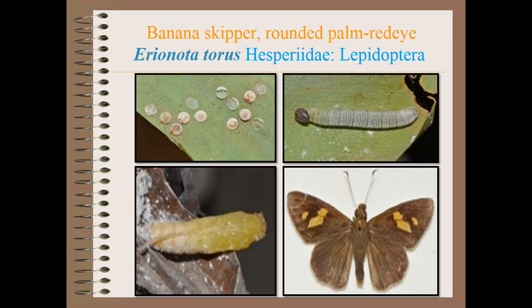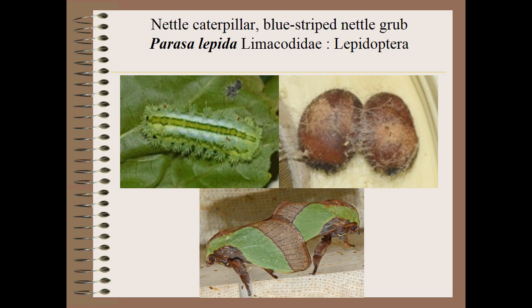One of the skippers is the round-headed palm skipper or red eye, Erionota thrax, family Hesperiidae, order Lepidoptera. The symptom is heavy defoliation. Next are nettle caterpillars — the blue-striped nettle grub, Parasa lepida — also causing heavy defoliation.